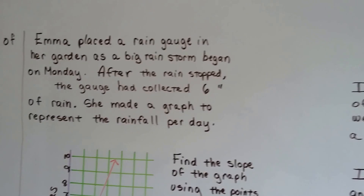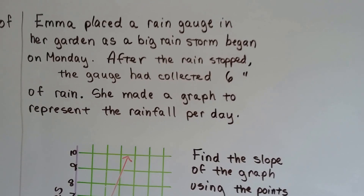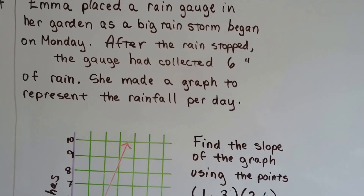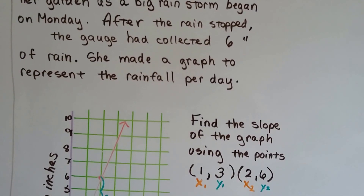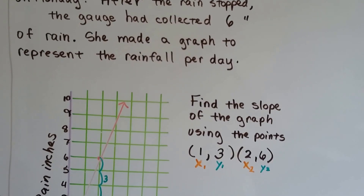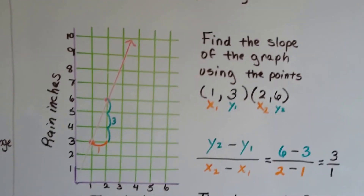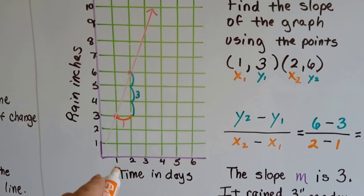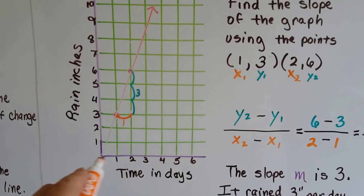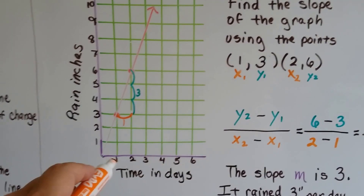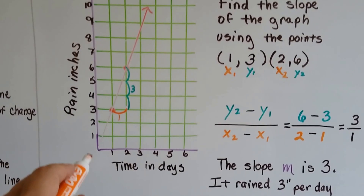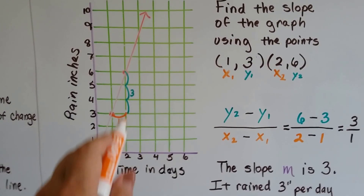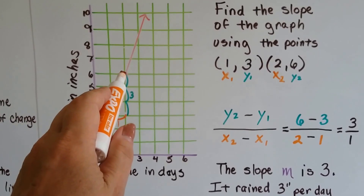Emma placed a rain gauge in her garden as a big rainstorm began on Monday, and after the rain stopped, the gauge had collected six inches of rain. She made a graph to represent the rainfall per day. The x-axis shows time in days, and the y-axis shows rain in inches. At one day there were three inches, and at two days there were six inches.